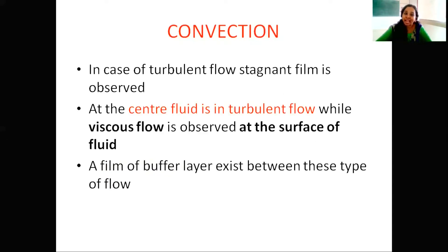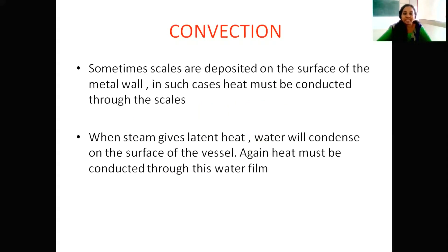In the case of turbulent flow, a stagnant film exists there. At the center of the fluid, the flow will be turbulent in nature. The viscous flow is observed at the surface of the fluid. A film or buffer layer exists between these two types of flow. Sometimes scales may be deposited on the surface of the metal wall.